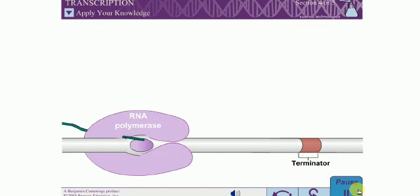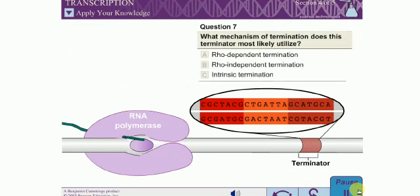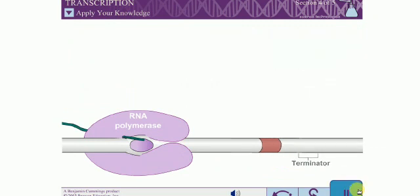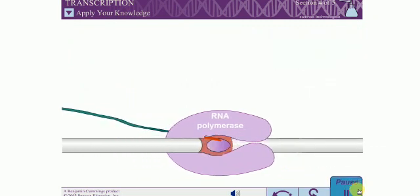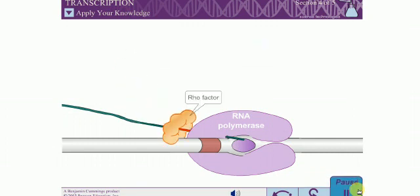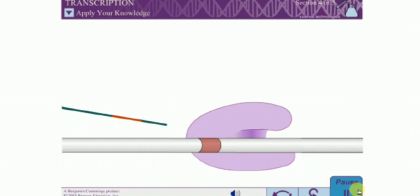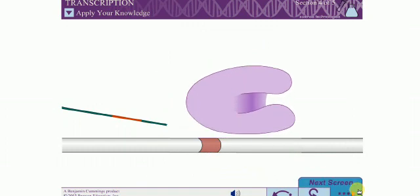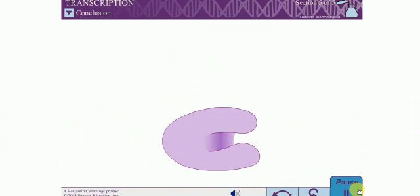Termination: Help this bacterial RNA polymerase dissociate from the DNA. Question 7: What mechanism of termination does this terminator most likely utilize? Question 8: Which protein is necessary for this mechanism of termination?